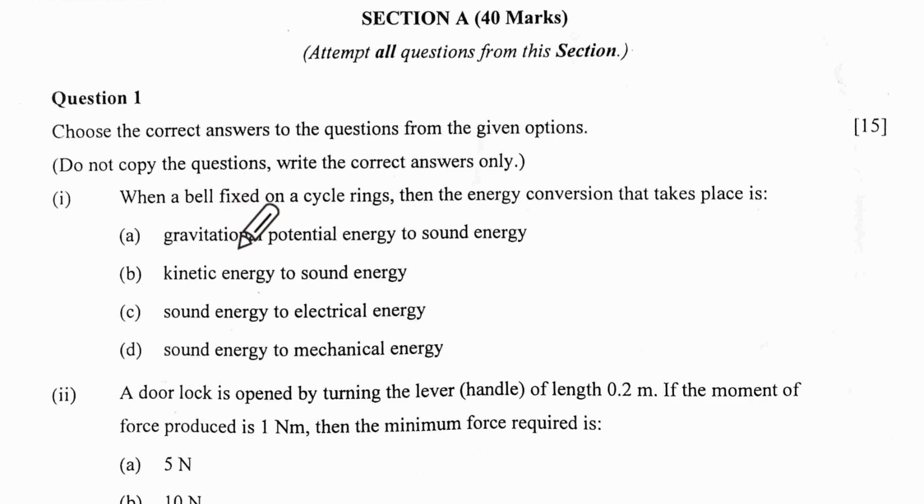Let us look at the first one. When a bell fixed on a cycle rings, the energy conversion that takes place is: when you ring the bell, you are pressing that lever, which means there is movement. So it is not gravitational potential energy, it will be kinetic energy to sound energy. So the option is B.